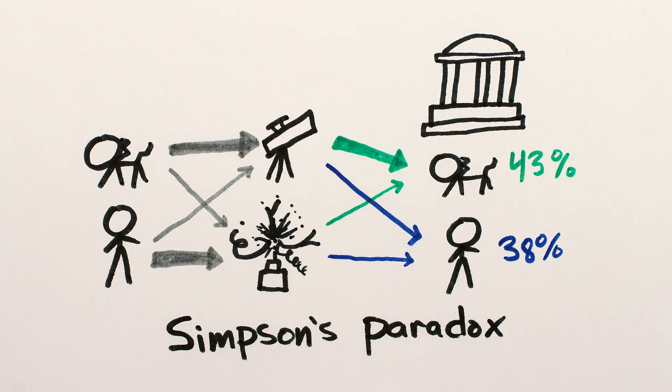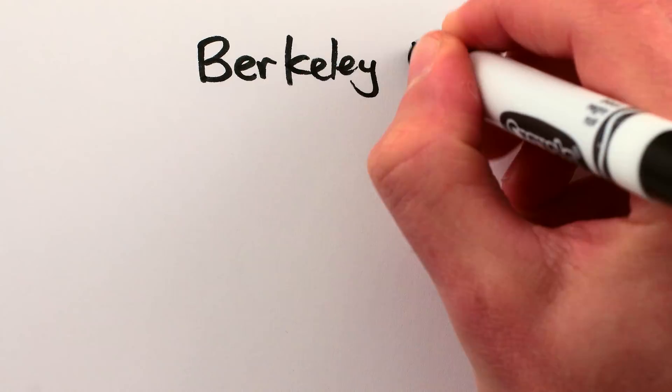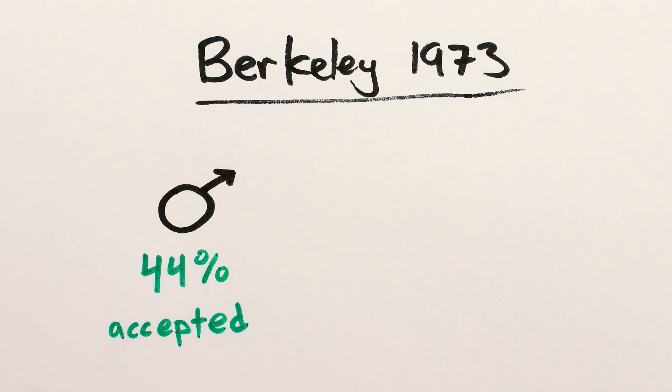This situation is another illustration of Simpson's statistical paradox, and something like it actually happened at Berkeley in the 1970s, which realized it was letting in 44% of men applying to the graduate school, but only 35% of women.